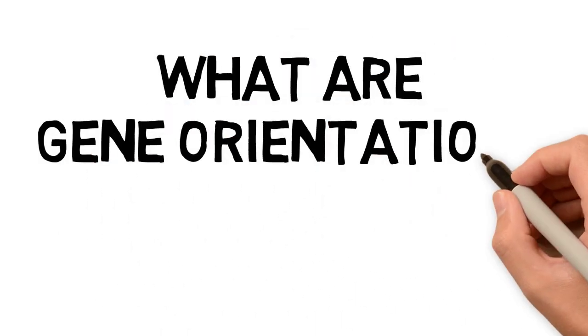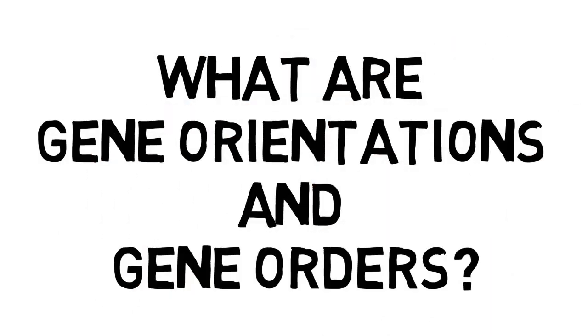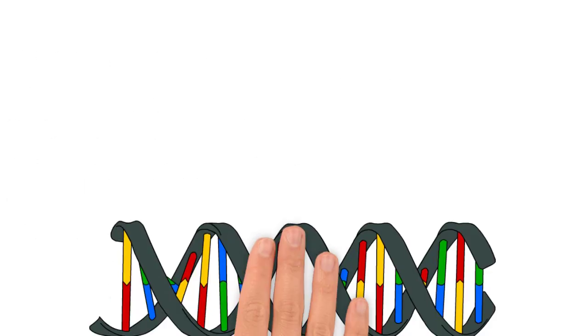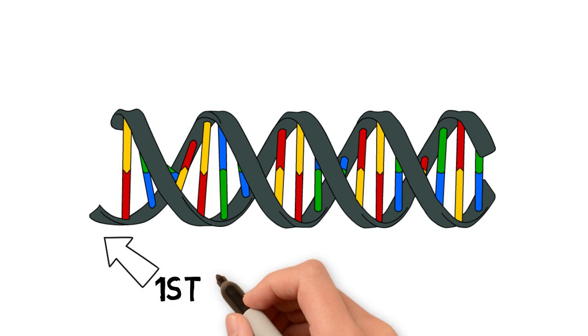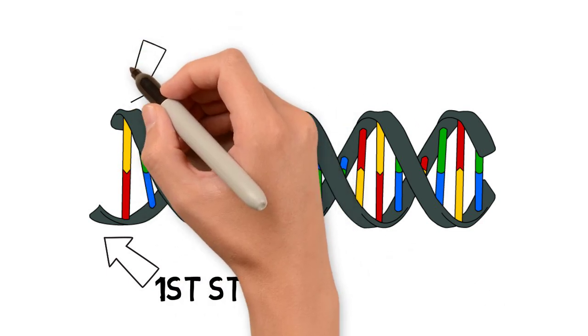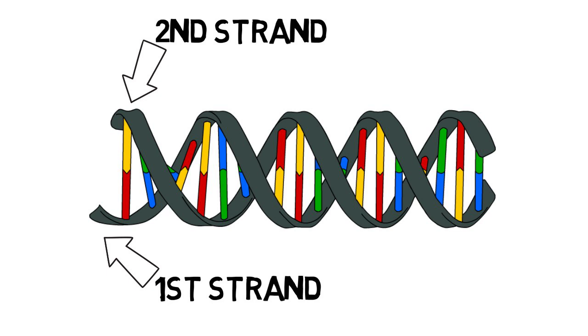What are gene orientations and gene orders? Since the DNA molecule is made up of two complementary strands connected together, the genetic information can be found on any of the two strands.